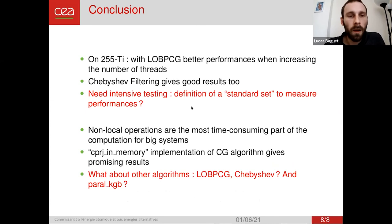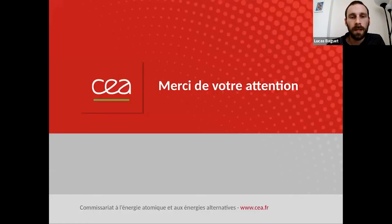Okay, so let me conclude. We have seen that on one system, LOB-PCG have better performances when increasing the number of threads. The Chebyshev filtering algorithm seems very interesting too, but in order to have more convincing results, it needs intensive testing, and also it would be nice to have a standard set of test cases to measure the performances. And in the second part, non-local operations are the most time-consuming part of the computation. The new C-proj in memory implementation gives an interesting result. And obviously, it would be very interesting to extend this result to other algorithms as LOB-PCG, Chebyshev, and also for the PAL-KGB framework. Thank you for your attention.